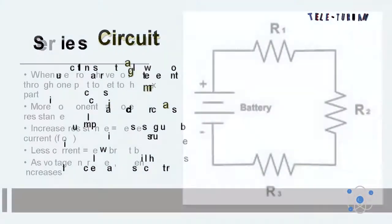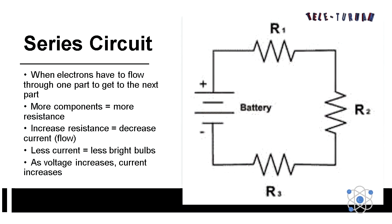Series circuit is described when electrons have to flow to one part to get to the next part. More components, more resistance. Increasing resistance decreases current flow. Less current, less bright bulbs. As voltage increases, current increases.